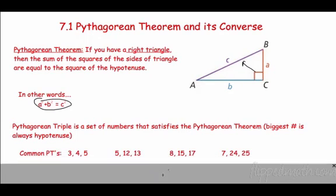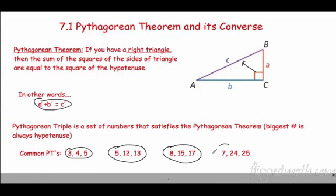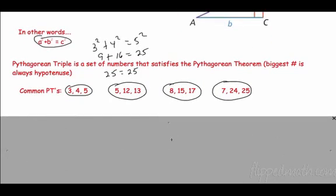A Pythagorean triple is a set of numbers that satisfies the Pythagorean theorem. The biggest number is always the hypotenuse. So, these are common Pythagorean triplets. 3, 4, 5. So, if you see these numbers, you automatically know it's a right triangle. It's going to work. If you see 3 and 4, you know the third side is going to be 5. If you see 4 and 5, you know the third side is 3. It's just automatic. 5, 12, 13. 8, 15, 17. 7, 24, 25. So, in other words, 3 squared plus 4 squared equals 5 squared. 9 plus 16 equals 25. 9 plus 16 is 25. So, yes, 25 indeed is 25. It's the side squares that really matter there.